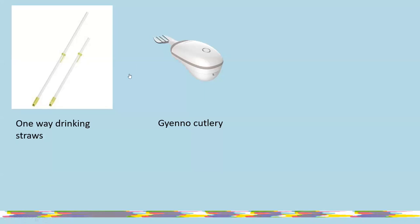Speech therapists recommend one-way drinking straws, which are good for people whose swallowing is affected by ataxia — if you suck, it holds the liquid, which is helpful if you struggle with suction. There is also Gyenno cutlery — it adjusts to your natural tremors to keep the cutlery steady, reducing food falling off the side. There's a link to that one.